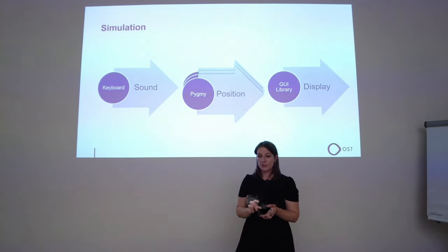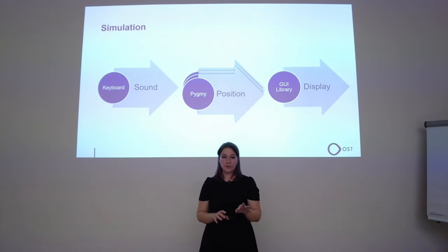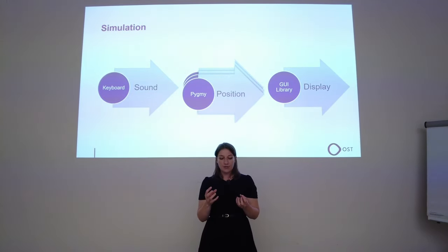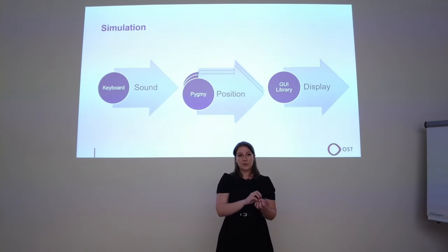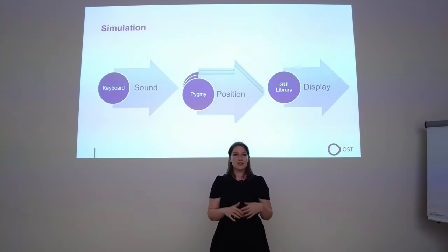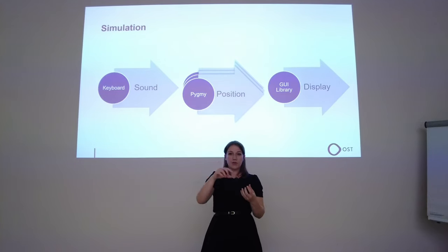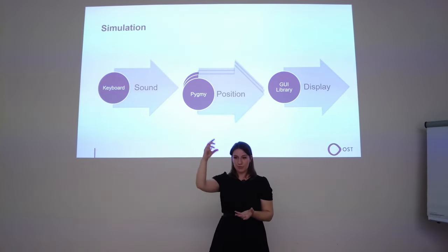The simulation architecture works like this: you have keyboard input where zero is no sound and two is a loud sound. The pygmy signal function produces a position defining where the pygmy should be. If a loud sound occurs the position decreases to zero — the pygmy hides. If no sound occurs the position increases and the pygmies look out over the edge. A UI library displays the pygmies by receiving this position and redrawing, creating an animation of the pygmy moving out.